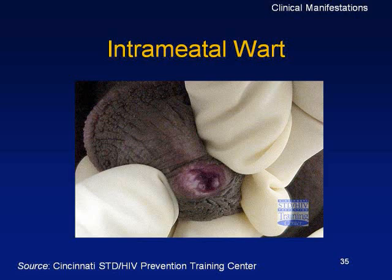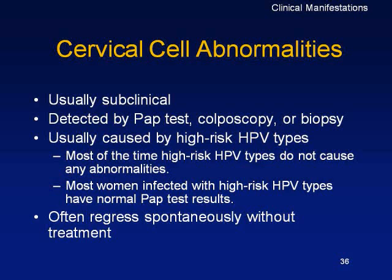What we normally care about in women is cervical cell abnormalities. We do a pap test, colposcopy to look at the uterus, or biopsy. This is often present in patients with high-risk HPV types. The problem is that many high-risk HPV types do not cause any abnormality, so the infection goes unnoticed — people show no signs of it.